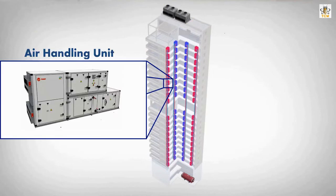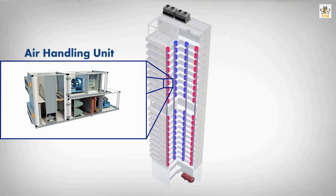The Air Handling Unit is the equipment used to regulate the air temperature inside the building. Air Handling Units are usually only responsible for one floor, and larger floor areas have more than one air handling unit. The AHU works by sucking the existing air, called return air.